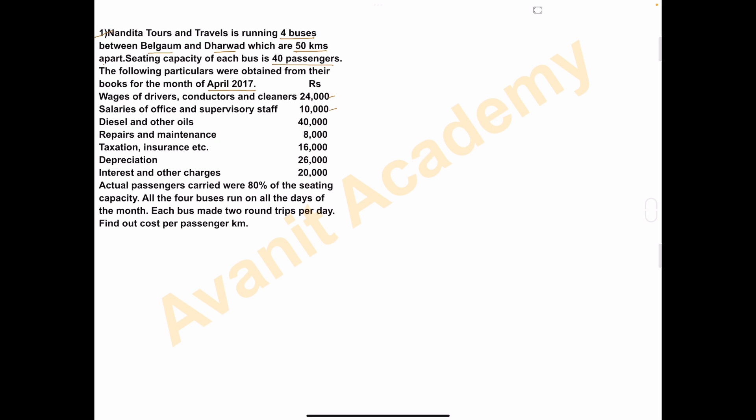We'll see what information they have provided here. Wages of drivers, conductors and cleaners: Rs. 24,000. Salaries of office and supervisory staff: 10,000. Diesel and other oil expenses: 40,000. Repair and maintenance: 8,000. Taxation, insurance, etc.: 15,000. Depreciation: 26,000. Interest and other charges: 20,000.